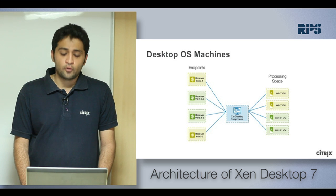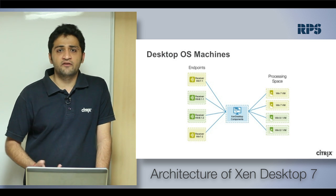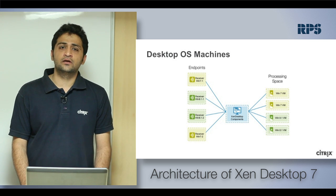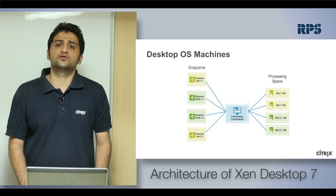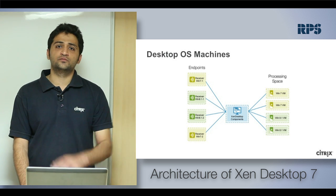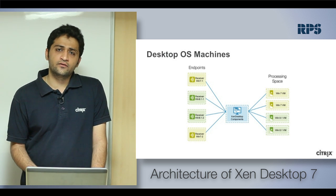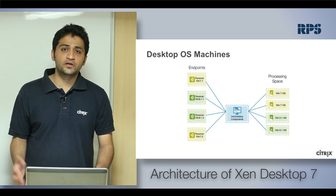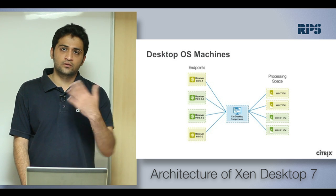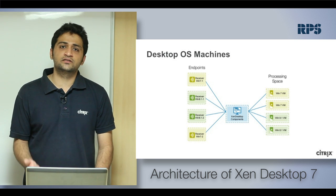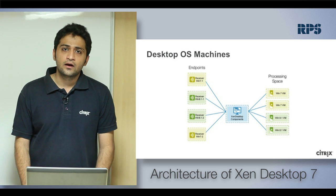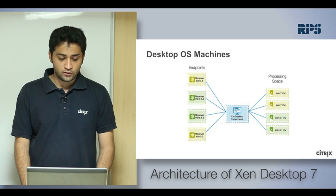You can deploy desktop operating system machines — Windows 7, Windows 8, or 8.1 — and publish those for end users, which covers your VDI infrastructures. End users with receivers can access those machines, giving companies the ability to host desktops inside their data centers. Users can access from any device, work on it, and all data remains inside the company premises.